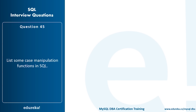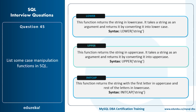List some case manipulation functions in SQL. There are three: LOWER, UPPER, and INITCAP. The LOWER function returns the string in lowercase — syntax: LOWER('string'). The UPPER function returns the string in uppercase — syntax: UPPER('string'). The INITCAP function returns the string with the first letter in uppercase and the rest in lowercase — syntax: INITCAP('string').